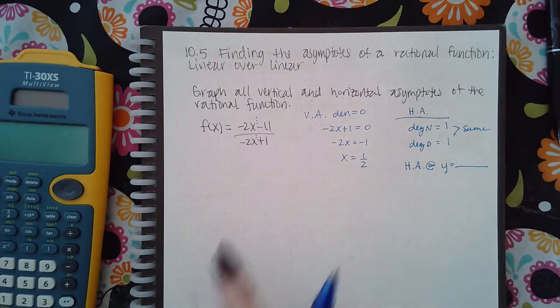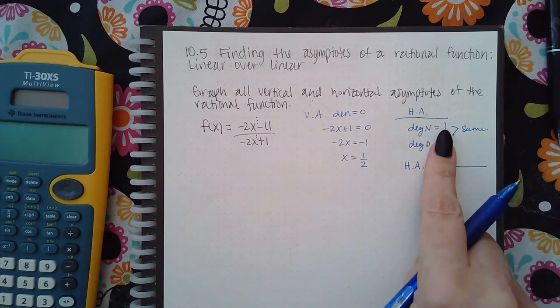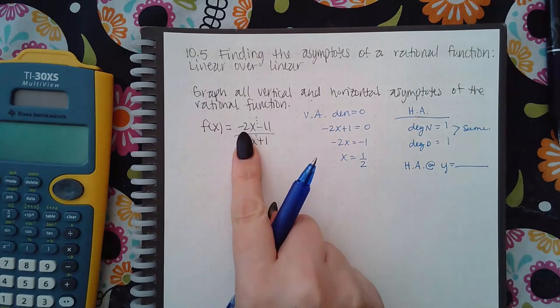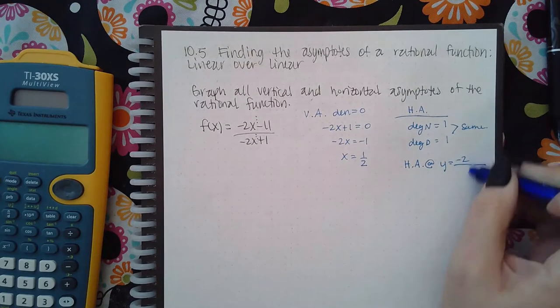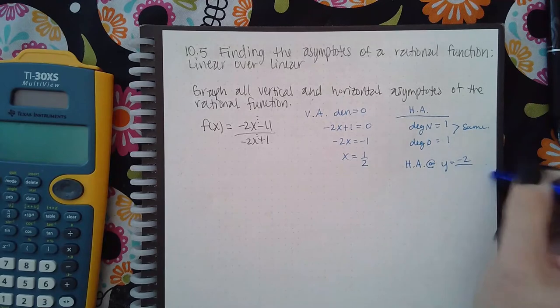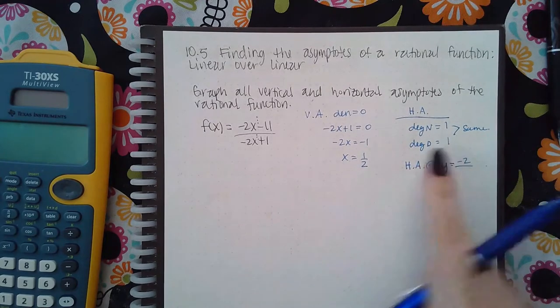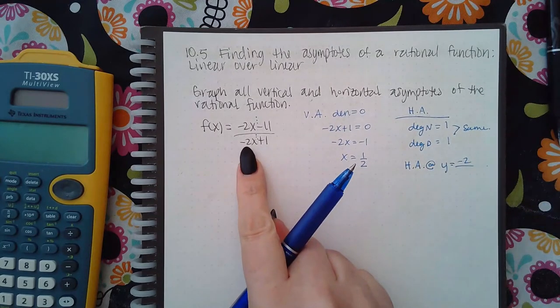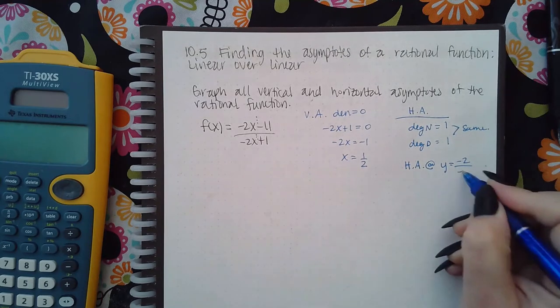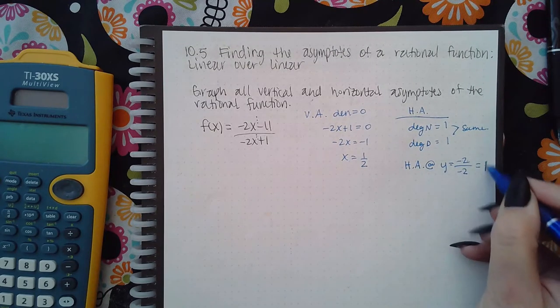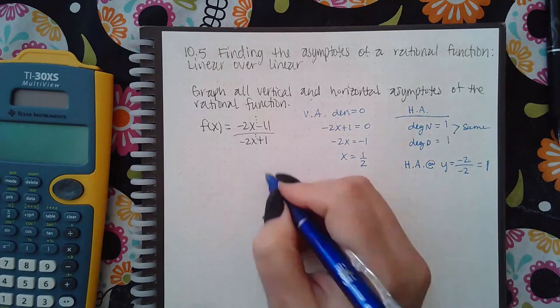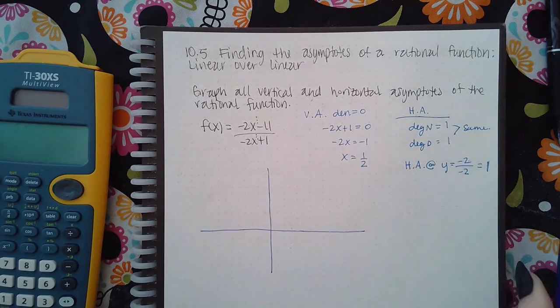This degree of one came from this term. The leading coefficient of that term is negative two. Now this degree of one came from this term, and that leading coefficient is also negative two by coincidence. So when I simplify this, I get positive one. Now I go to the graph paper to graph my asymptotes.